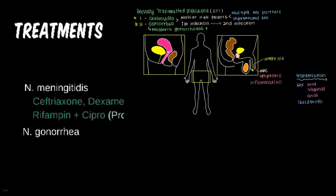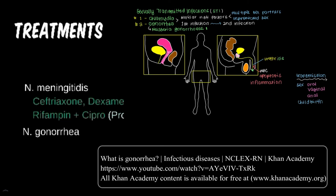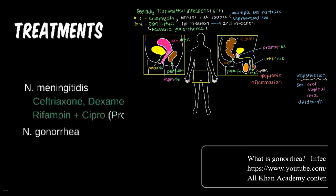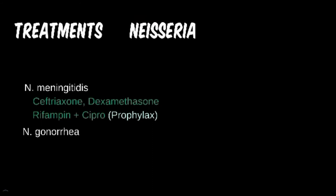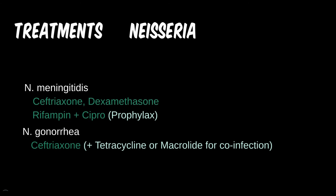Gonorrhea is traditionally treated with doxycycline. However, many experts do not recommend monotherapy for this pathogen due to its increased resistance to many drugs. And as doxycycline is a known teratogen, it should be avoided in pregnancy. Though doxy is still effective, the preferred single-dose treatment is a cephalosporin and a macrolide, such as azithromycin. This covers a co-infection with chlamydia, which is very common.